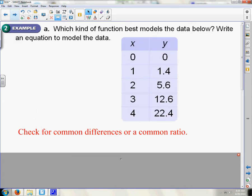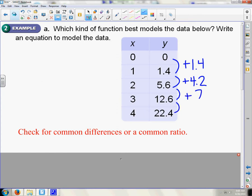Which kind of function best models the data below? Write an equation to model the data. So, first, you're going to look for a common difference or a common ratio. So I'm going to look here. That is going up by 1.4. Then, it's going up by 4.2. Then, it's going up by 7. And then, it's going up by 19.8. So, I know that this isn't linear. I know right off the bat that this is not a linear function. So, it doesn't have a common difference.